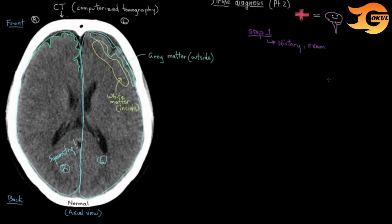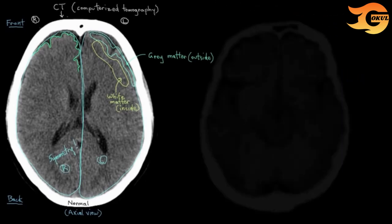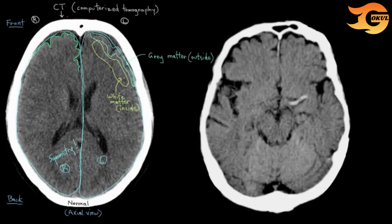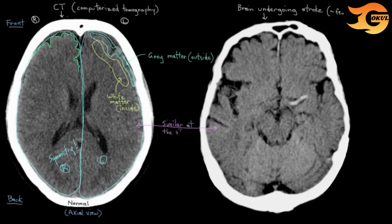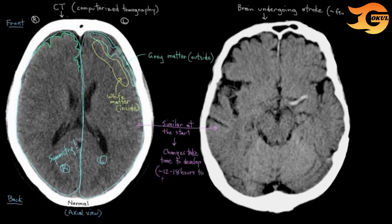What about a brain that's had a stroke? You actually can't immediately tell — even if you took a CT scan a few minutes or even an hour after someone's had a stroke, it would look pretty much like a normal CT scan. That's because the changes that happen in the brain during and after a stroke take time to develop, and sometimes you can't see any brain changes on CT until about half a day after the stroke — usually about 12 to 18 hours after is when you can start seeing some changes.